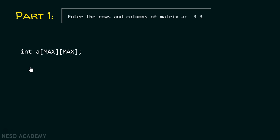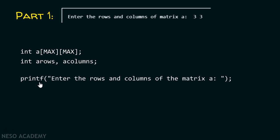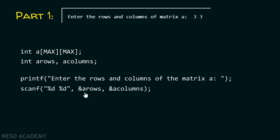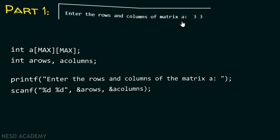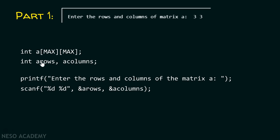Here I am taking matrix A, along with two variables: A_rows and A_columns, where I will store the number of rows and number of columns of matrix A entered by the user. In the printf function, we will ask the user to enter the rows and columns of matrix A, and then we will take the inputs inside these variables A_rows and A_columns. For matrix B, this will change to B, B_rows, and B_columns.